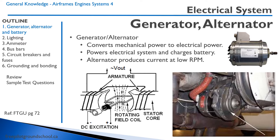Generators and alternators produce electrical energy by having a rotating coil surrounded by magnets, and in the magnets you have wires or a coil as well. Alternating this magnetic field induces a current to the output.